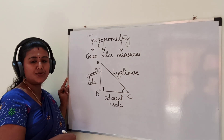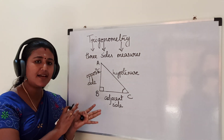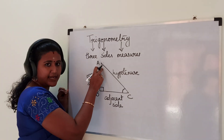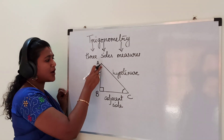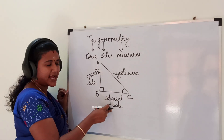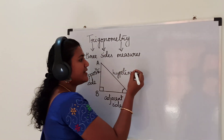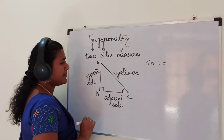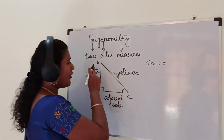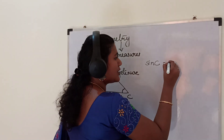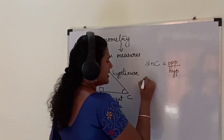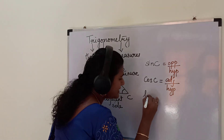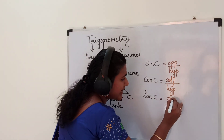Now we will see the trigonometric ratios one by one. Trigonometric ratios are the ratios of the sides with respect to an acute angle. Note that if we consider angle A as the acute angle, then the sides will change accordingly. The first trigonometric ratio is sin C, which is opposite side divided by hypotenuse. The ratio cos C is adjacent side divided by hypotenuse. And tan C is equal to opposite side divided by adjacent side.